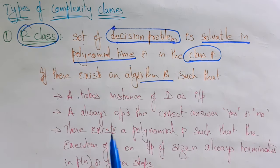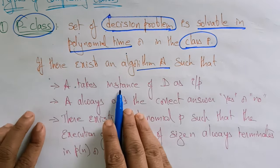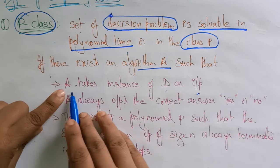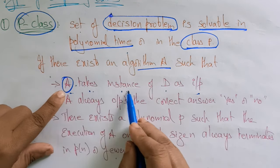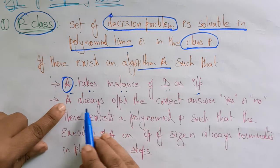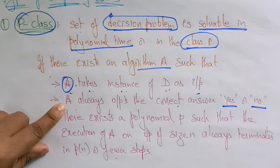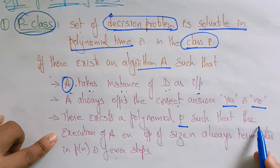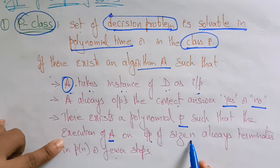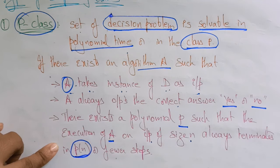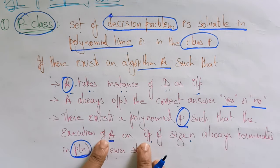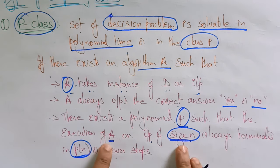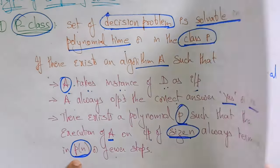So if there exists an algorithm A such that A takes an instance of decision problem D as input, and A always outputs the correct answer — either yes or no — because this is a decision problem. There exists a polynomial P such that the execution of A on input of size N always terminates in P of N steps or fewer.